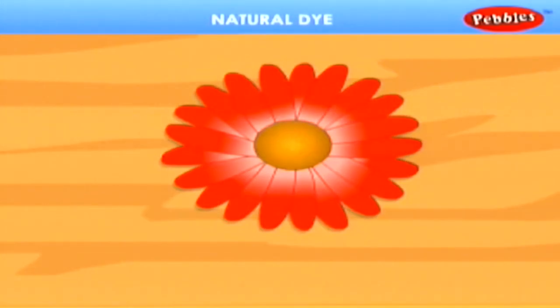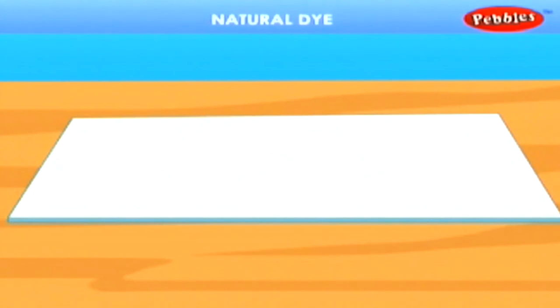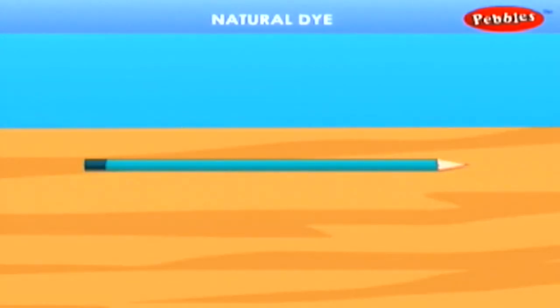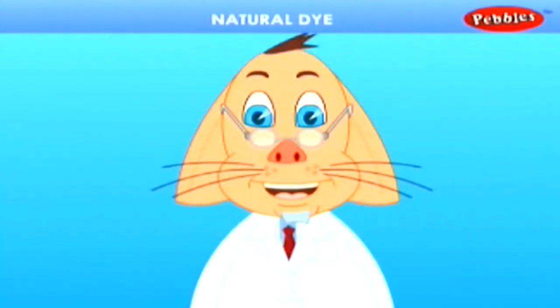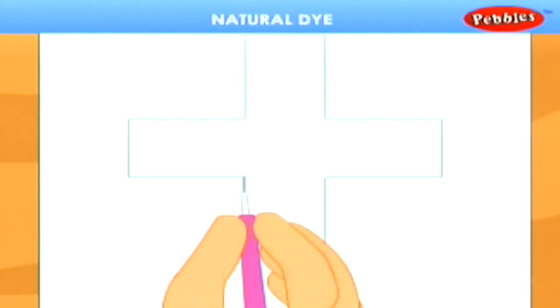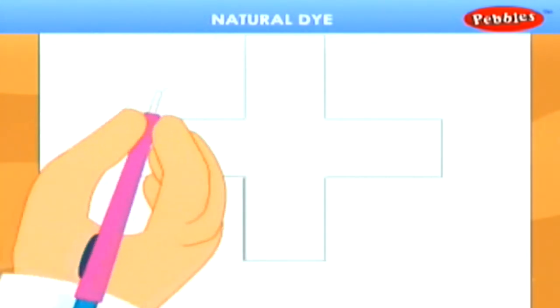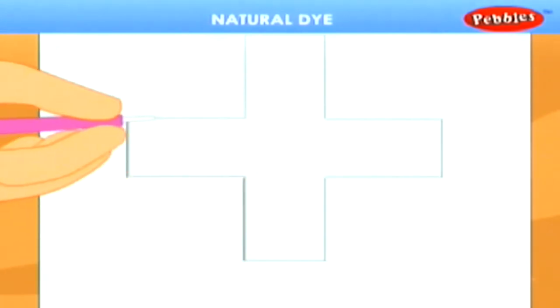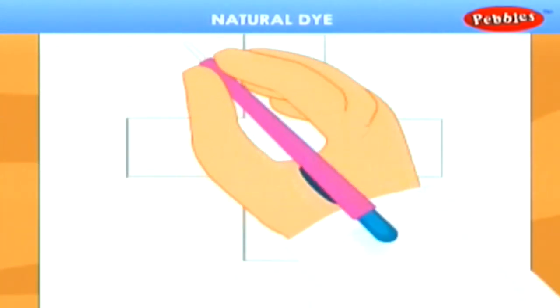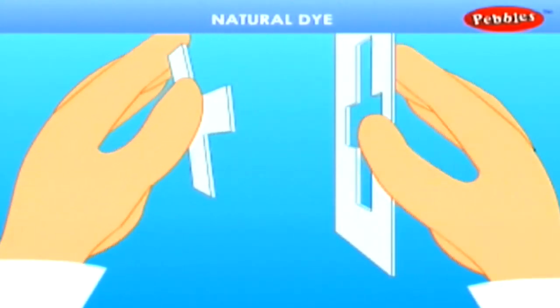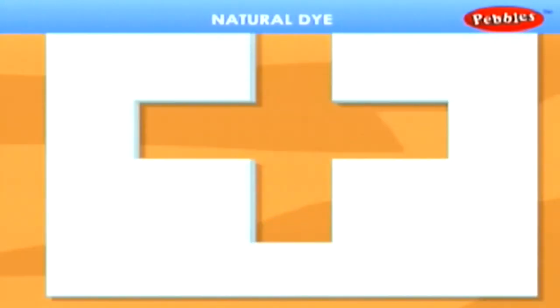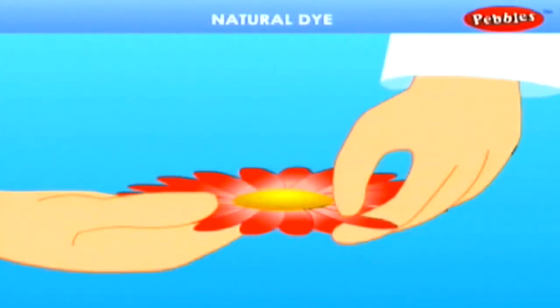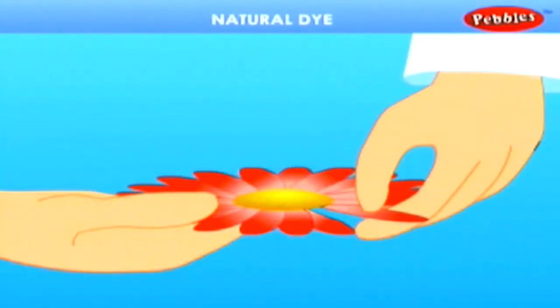Take a red colour flower, a handkerchief, a paper board, a pencil and a cutter. On the paper board, draw the design of your choice and cut the design with the help of a cutter. Remove the inner part of the board and then take the red colour flower and pick the red petals separately.